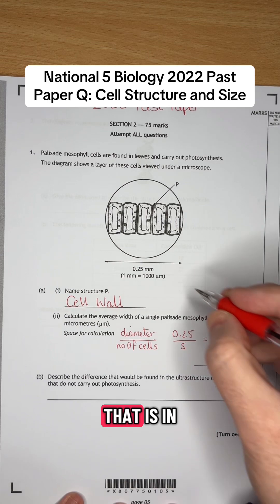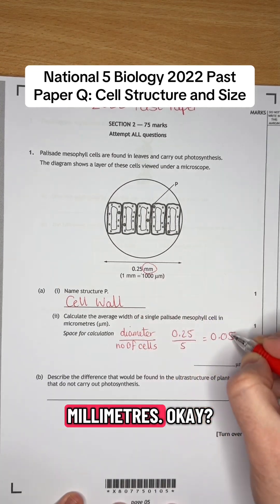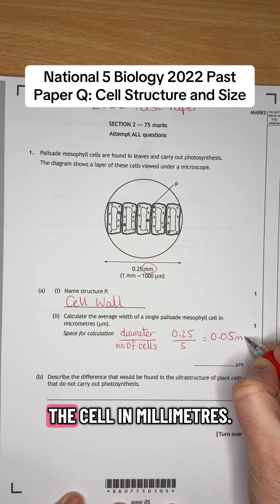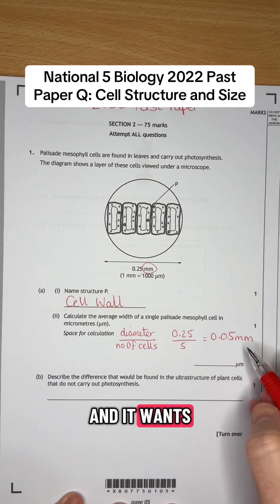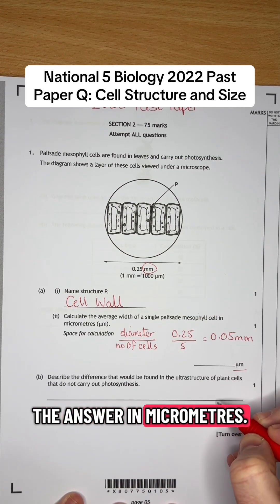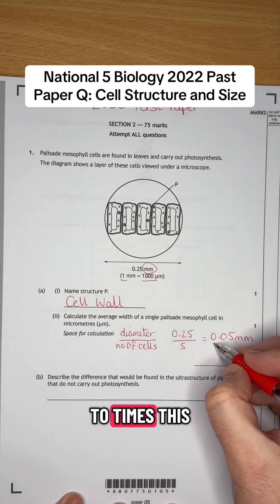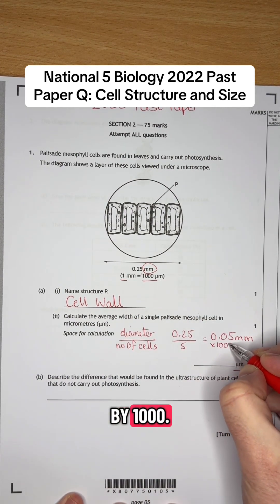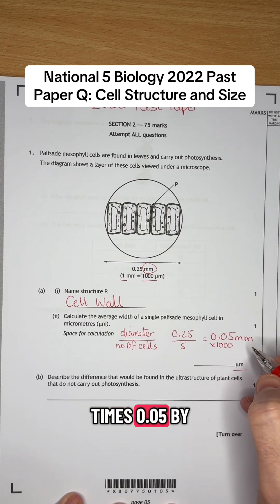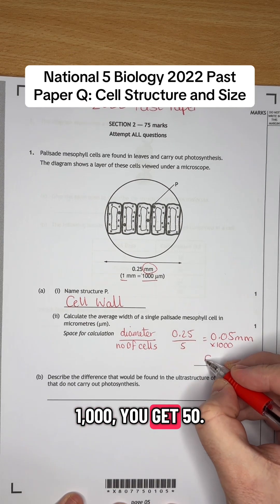However, that is in millimeters. So that is the size of the cell in millimeters, and it wants the answer in micrometers. So it tells us up here 1 millimeter is equal to 1000 micrometers. So we have to times this by 1000. And when you times 0.05 by 1000, you get 50.